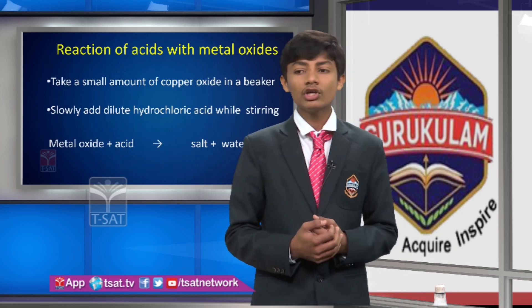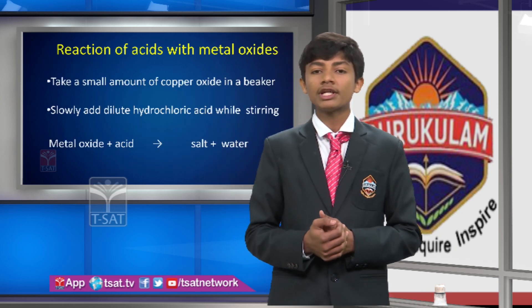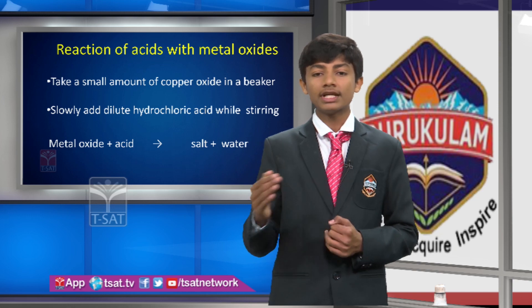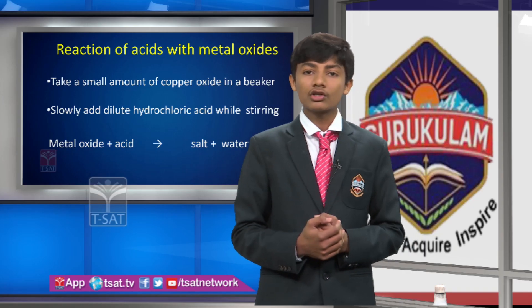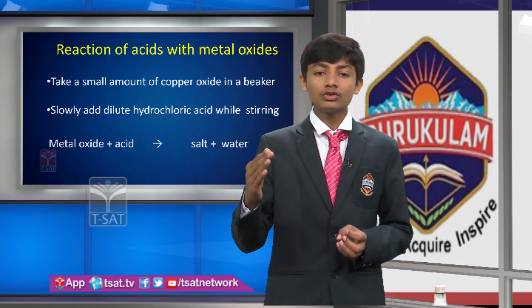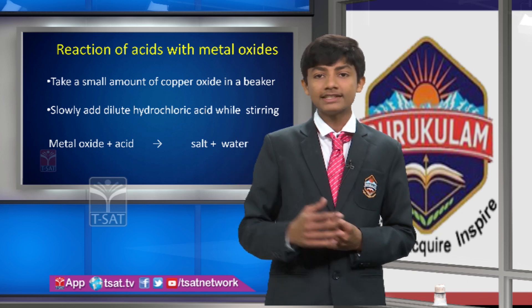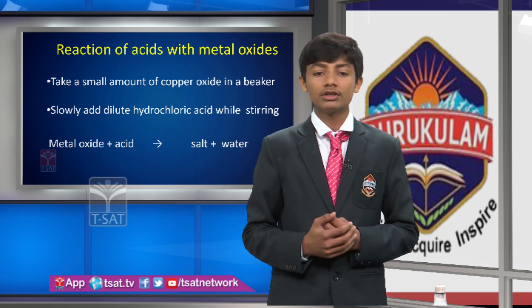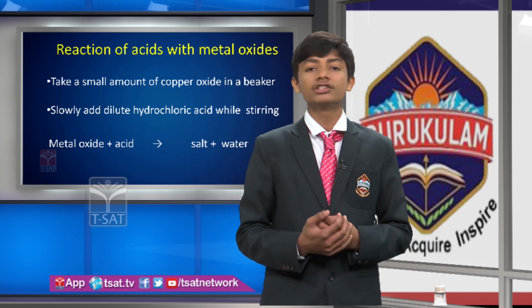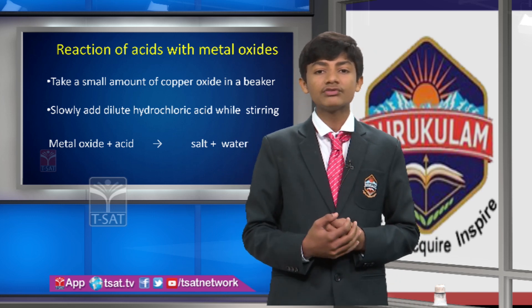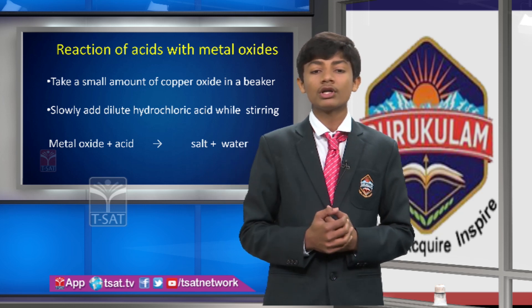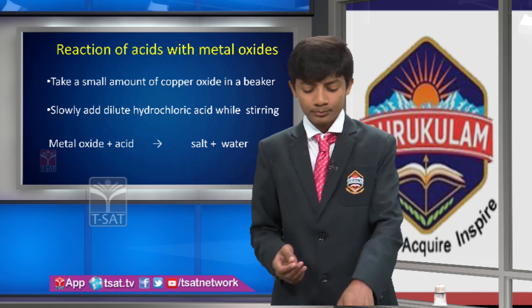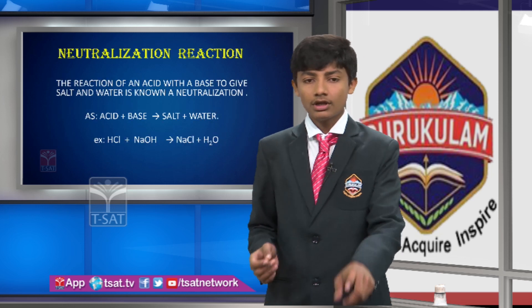Next is the reaction of acid with metal oxide. When acid reacts with a metal oxide, it produces salt and water. For example, when zinc oxide reacts with hydrochloric acid, it produces salt and water. This is the main aim of this activity.